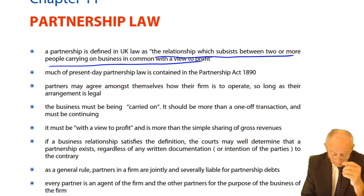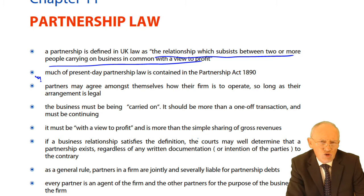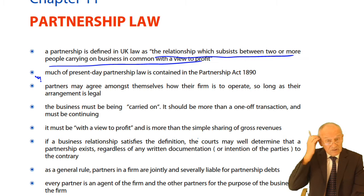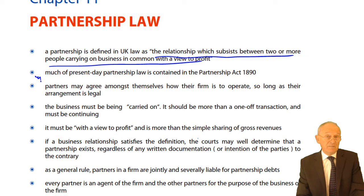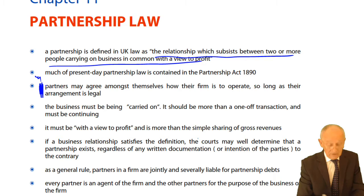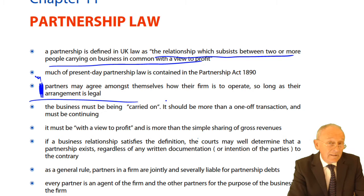Much of present-day law is based on the Partnership Act 1890 — 120-plus years ago. The Victorian legislature decided we needed legislation covering the concept of a business organisation where two or more people carry on business in common with a view to profit. But this is important: partners may agree to do anything they want, so long as it's legal.